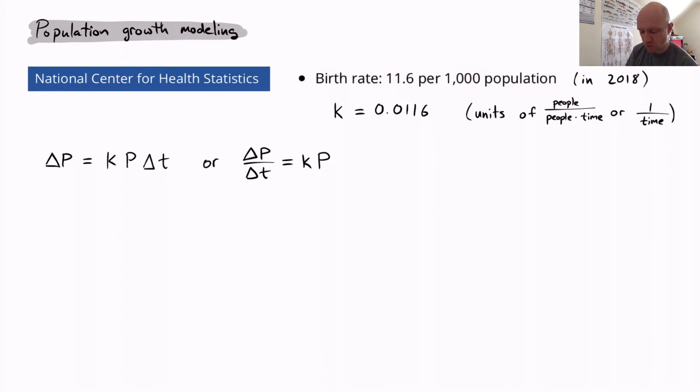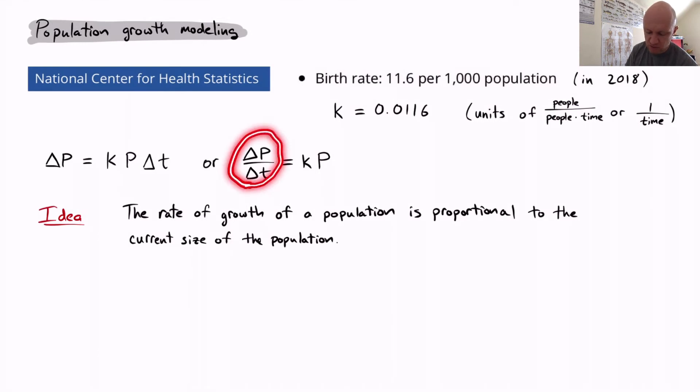All right, we're actually very close to having a differential equation right now. What this is saying is there's a general idea. The rate of growth, the rate of change of the population is going to be proportional to the size of the population itself. That's this general idea that we've developed here.